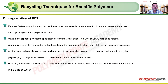Biodegradation of PET can be carried out by ester-hydrolyzing enzymes called esterases, though this happens under extreme conditions. Esterase and some microorganisms are known to biodegrade polyesters at a rate depending on the polyester's structure. Aliphatic polyesters such as polyhydroxy fatty acids — marketed as Biopol by ICI — are suitable for biodegradation, whereas aromatic polyesters like PET do not possess this property and are more difficult to degrade.